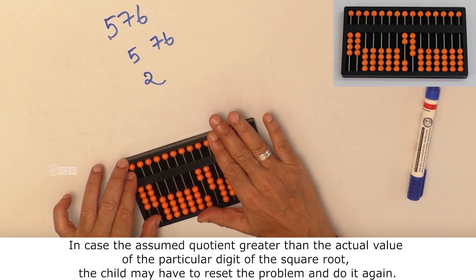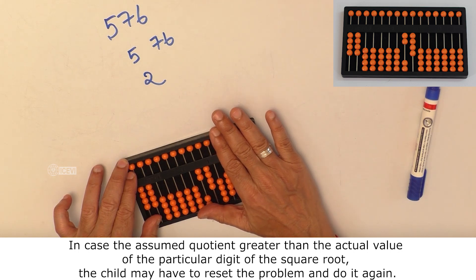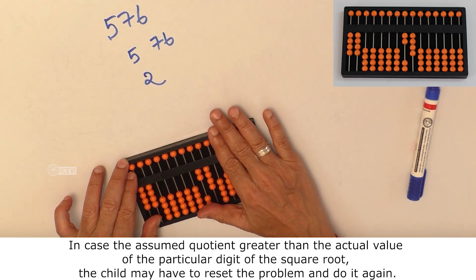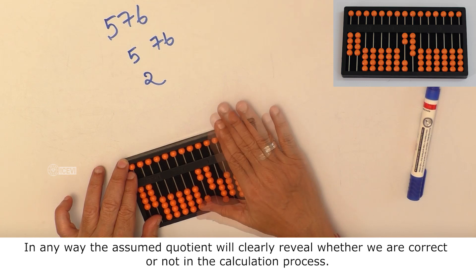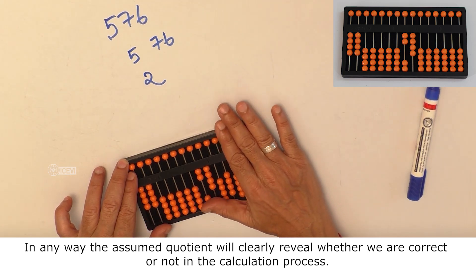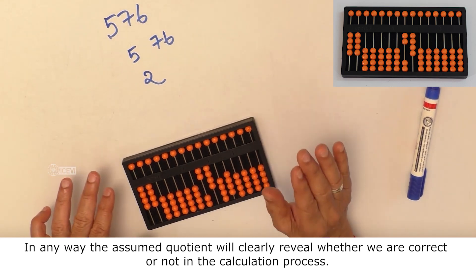In the case of the assumed quotient greater than the actual value of the particular digit of the square root, the child may again have to reset the problem and do it again. In any way, the assumed quotient will clearly reveal whether we are correct or not in the calculation process.